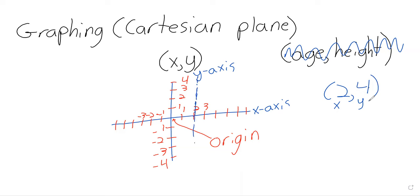The vertical line is called the y-axis. So in this example, x is 2 and y is 4. These are like map coordinates — or if you ever played Battleship, you'd give a horizontal coordinate and a vertical coordinate, and that's exactly what this point (x, y) is doing.